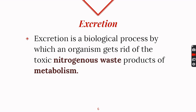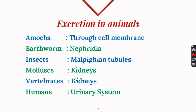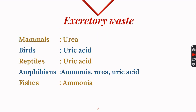With the help of excretion, homeostasis is maintained inside the body. Excretion is a biological process in which organisms get rid of toxic nitrogenous waste products of metabolism. Different organisms use different organs for this: excretion in amoeba is done via the cell membrane, earthworms use nephridia, insects use structures called Malpighian tubules, and in mollusks and vertebrates — including humans — excretion is done with the help of kidneys, forming a complex urinary system.